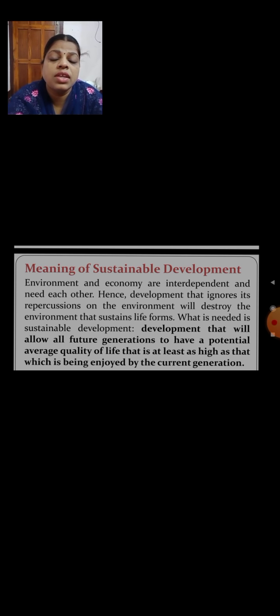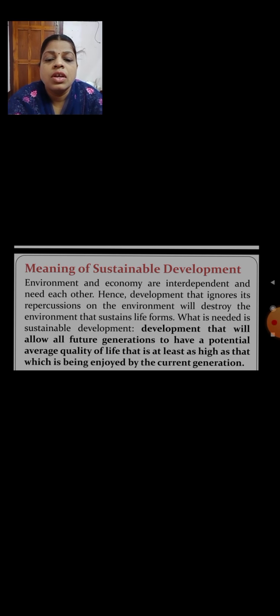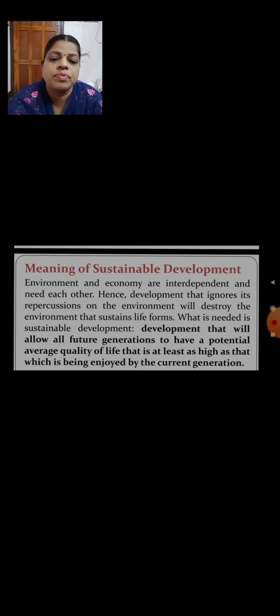Next we are going to discuss about the steps and strategies to attain sustainable development. Before that, let me explain what is sustainable development. We know that environment and economy are interdependent and need each other. Hence, that development which ignores its repercussions on the environment will destroy the environment that sustains life forms, and what is needed is sustainable development — development that will allow all future generations to have a potential average quality of life that is at least as high as that being enjoyed by the current generations.